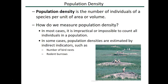A major measure in population ecology is population density — the number of individuals per unit of area or volume. In some cases we can measure it directly by counting; in other cases we use indirect indicators such as the number of nests or burrows. Often, not every individual in an entire population is measured. Instead, an ecologist or doctor will take a small sample, count individuals in that sample, and extrapolate to the entire study area.